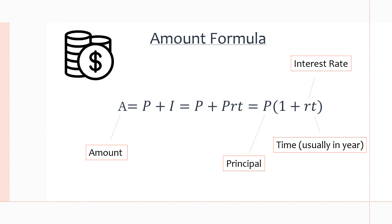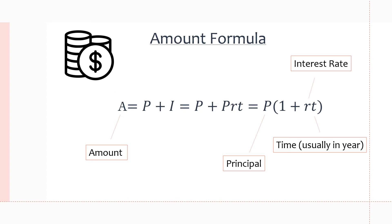Here is the amount formula for simple interest. Amount A equals principal P plus total interest I. Substituting in our interest formula I = PRT, we get A equals P plus PRT. Factoring out P gives us A equals P times (1 + RT), where R is the interest rate and T is the time. The formula we'll mostly be using is: A equals P times (1 + RT).